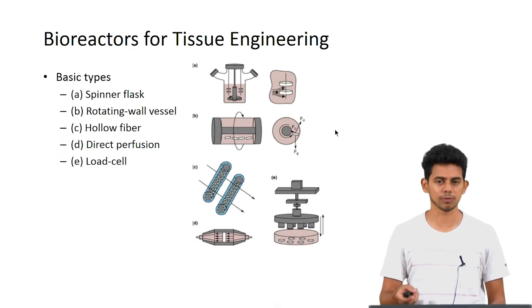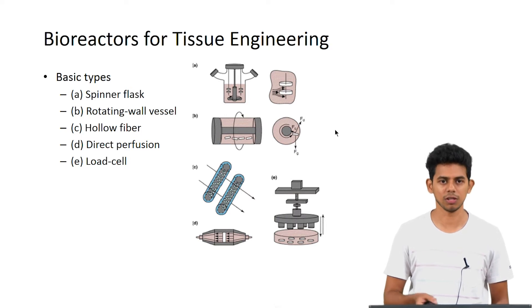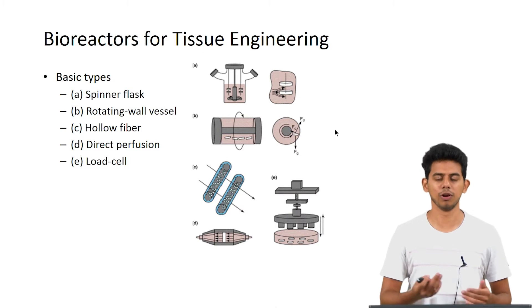These are the basic types of bioreactors which are used in tissue engineering. The first one is a spinner flask wherein there is low degree agitation which is given to the flask.